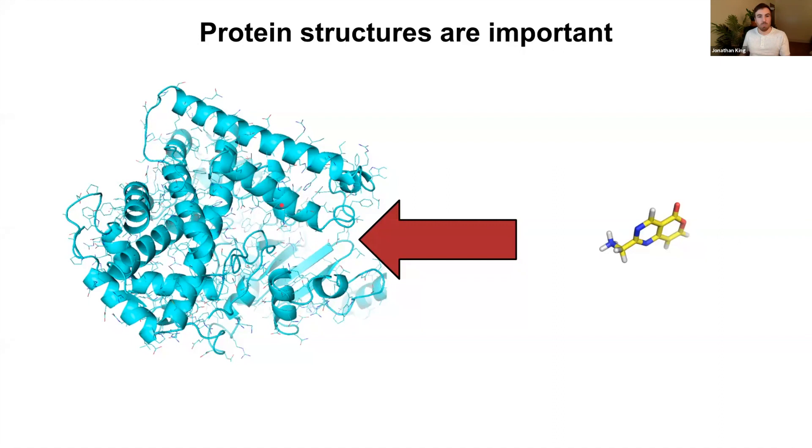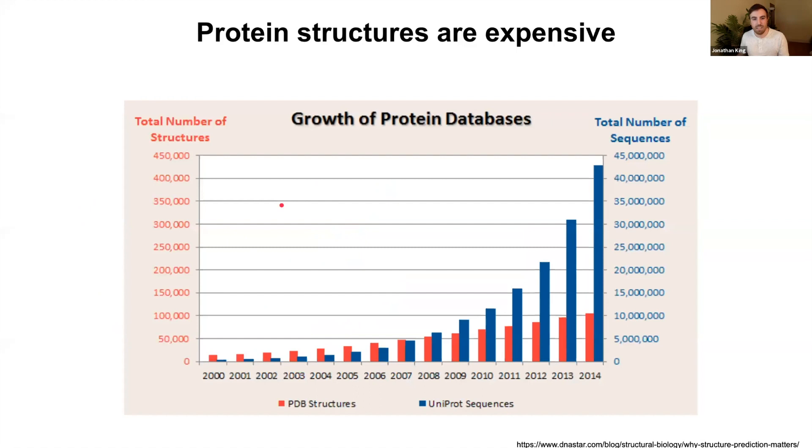Unfortunately, even though protein structures are super important, they're extremely expensive. The red part of this graph shows the total number of protein structures over time, and the blue part shows the total number of protein sequences over time. You can see there's far fewer protein structures available. A large part of this has to do with the fact that the experiment that can produce what protein structure looks like can cost tens of thousands of dollars and sometimes it doesn't even work. As of March 2020, there were 170 million protein sequences but only 155,000 protein structures.